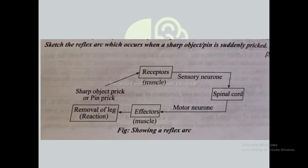An example of a reflex arc: when a sharp object pricks the receptor (our muscles), sensory neurons carry impulses to the spinal cord. From the spinal cord, motor neurons carry the impulses to the effector muscles, and finally we remove the leg — that is our reaction to the stimulus.